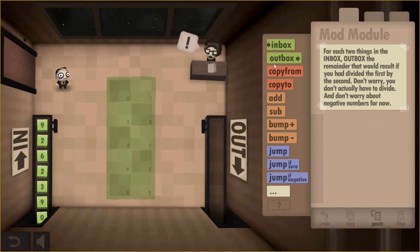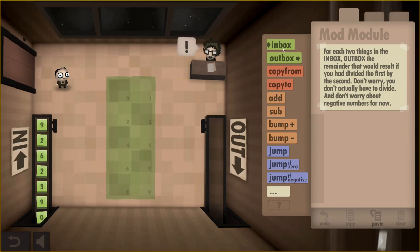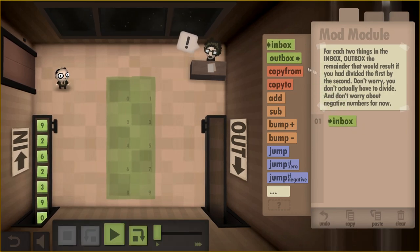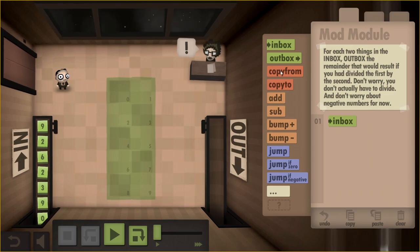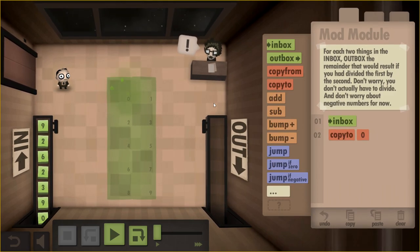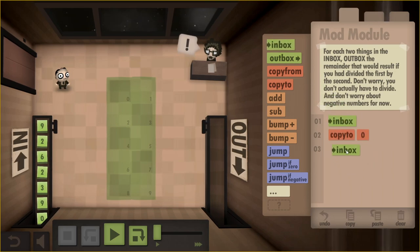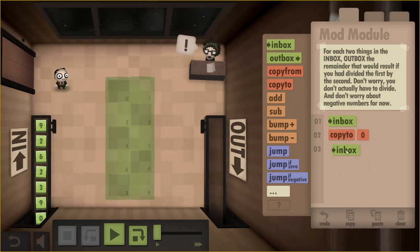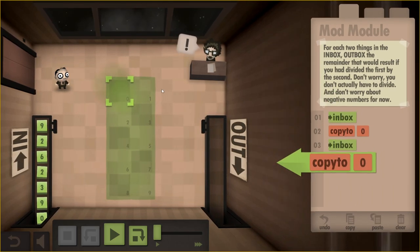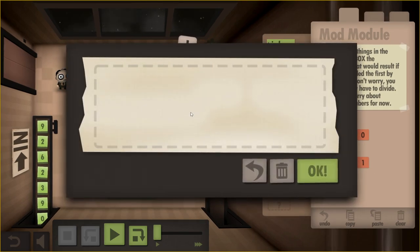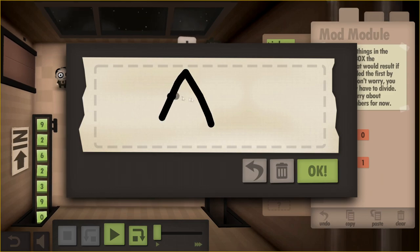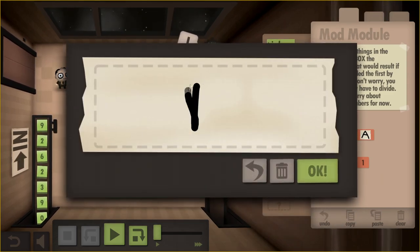So 9 mod 2 is going to be the remainder of 9 divided by 2, which in this case would be 1, because 9 divided by 2 is 4 remainder 1. So I think what we're going to have to do here, first, obviously we need to get numbers from the inbox.